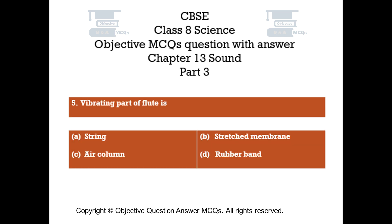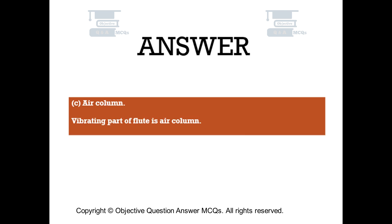Question number 5. Vibrating part of flute is: Option A – string. Option B – stretched membrane. Option C – air column. Option D – rubber band. The right answer is option C. Vibrating part of flute is air column.